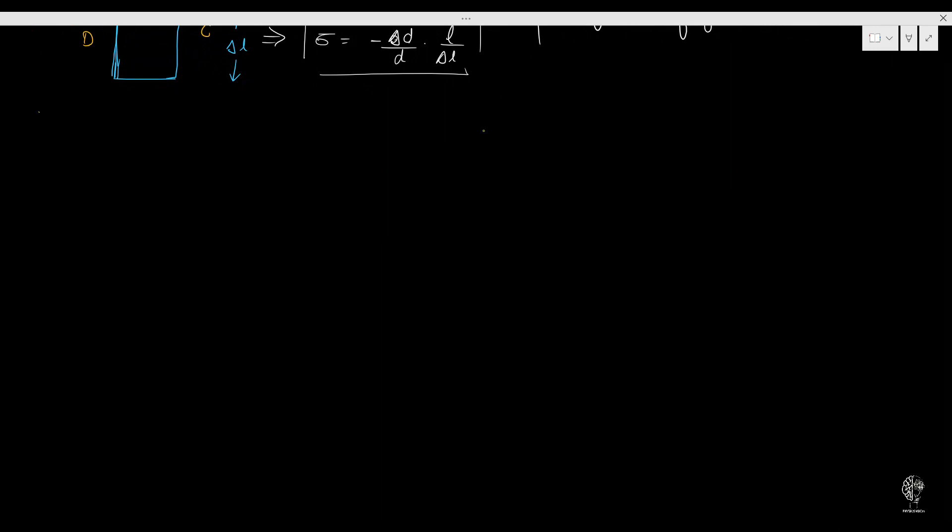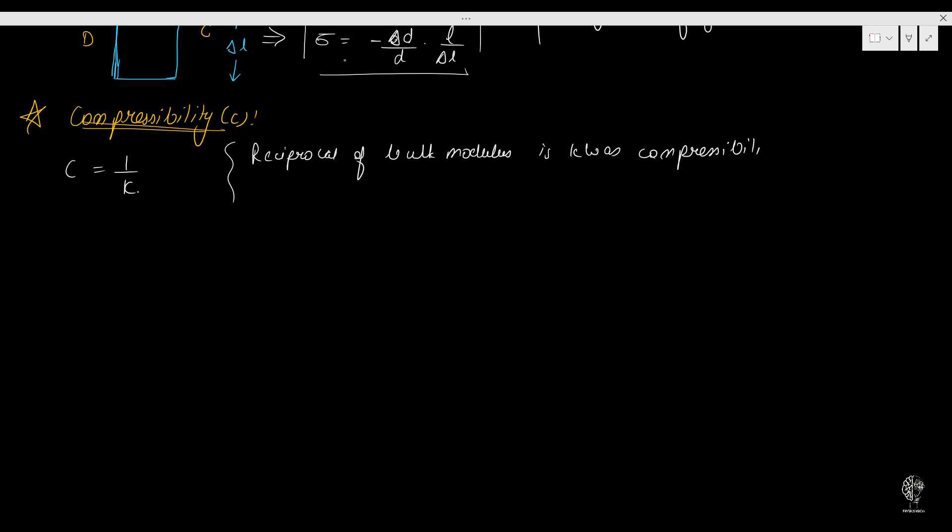If this is clear, what do we do here? Let's go ahead and we will move to the next topic which is my Compressibility. I will use a C for this. Now let's see, compressibility, what happens? It's very simple. It's the reciprocal of Bulk Modulus. So even if you want to define it, you are going to write this: reciprocal of Bulk Modulus. This is known as Compressibility.